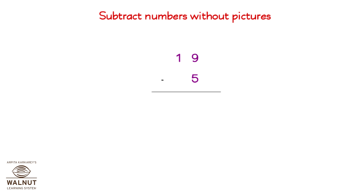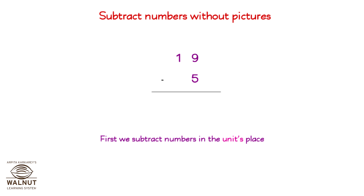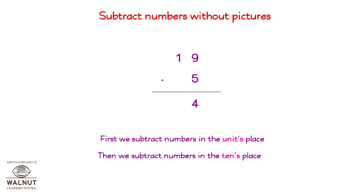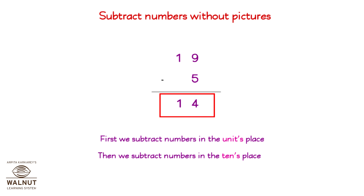How about trying another problem? 19 minus 5. We start from the left and then keep going to the right. First, we subtract numbers in the units place: 9 minus 5 is 4. Then we subtract numbers in the tens place: 1 minus nothing is 1. So that is our final answer. 19 minus 5 is equal to 14.